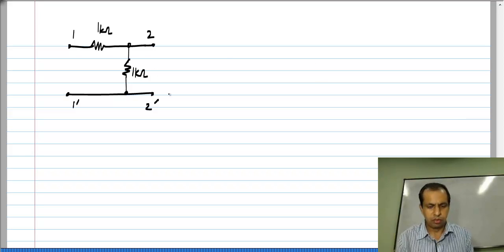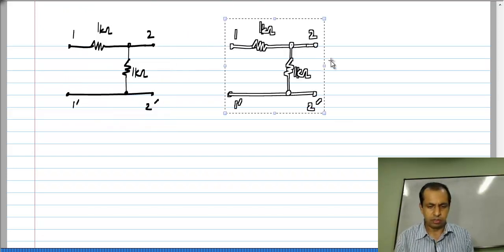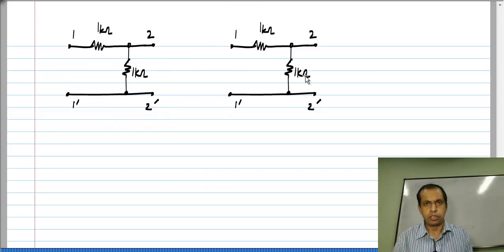This is my two-port and to measure G parameters I need two conditions with some independent source set to 0.